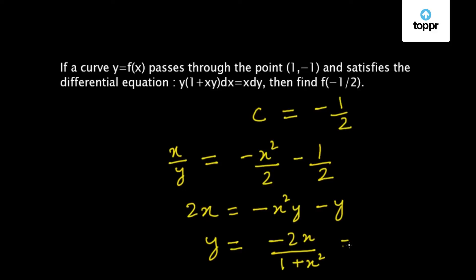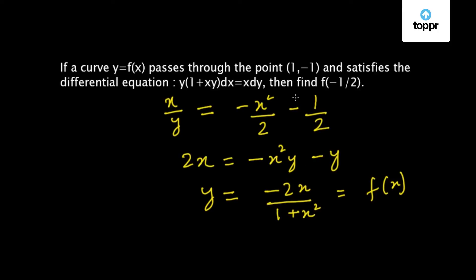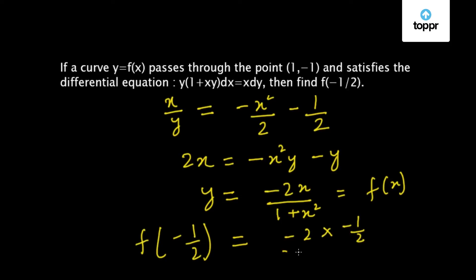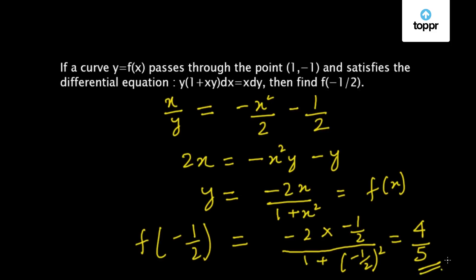So this is our f(x). Now in the question, it is asked to find f of minus half. We will just substitute x = -1/2 into this function. So we get (-2 × (-1/2)) / (1 + (-1/2)²), which comes out to be 4/5. So this is our answer.